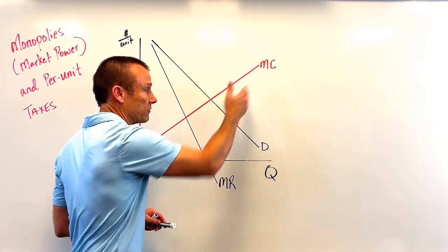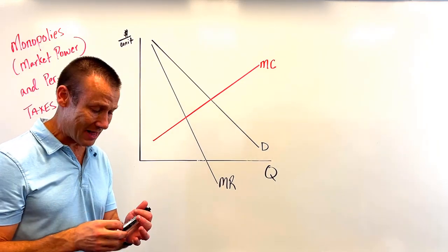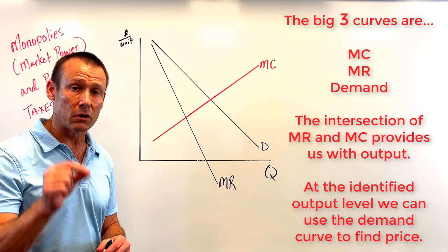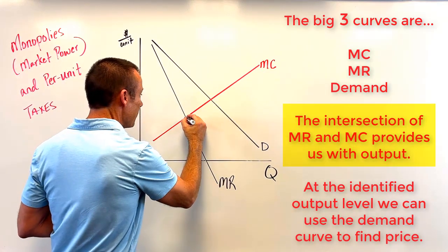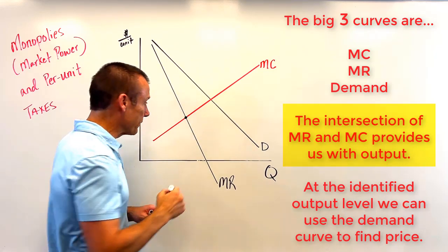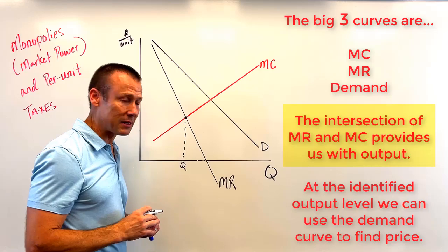MR is not demand because again, no price discrimination. When I've got my big three—MC, MR, and demand—I want to find price and output, but in the opposite order. Start always with output. You go MC equals MR; that is going to provide you with the output. So go ahead and bring that down. There's the profit-maximizing output.